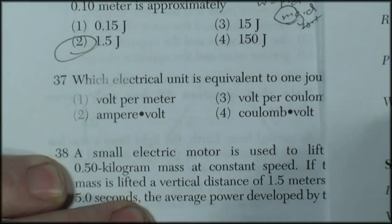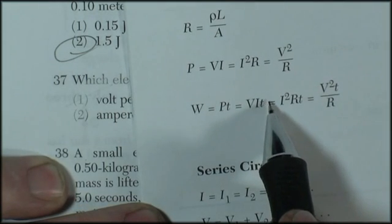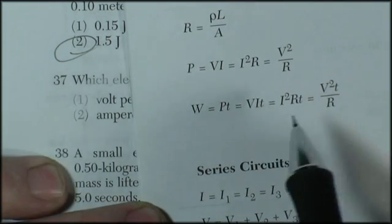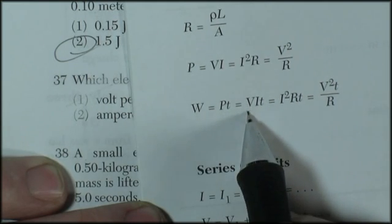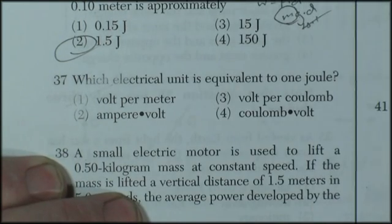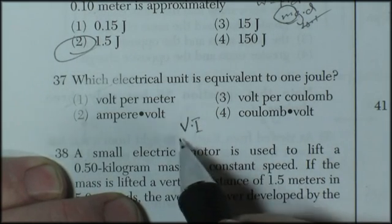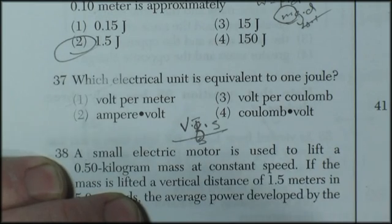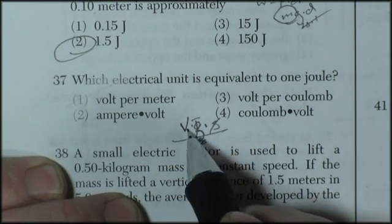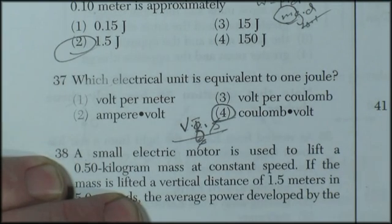Volts times amps times time. But amps is coulombs per second. So this is really the tricky one. Volts times coulombs per second, charge per second, times seconds, would be volts times coulombs. So the answer is 4. But that's not an easy question at all.